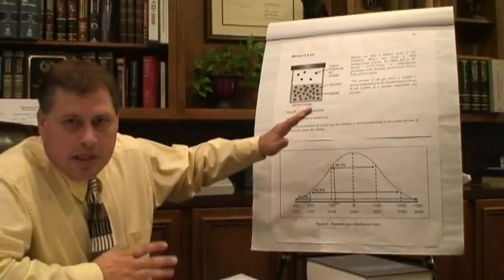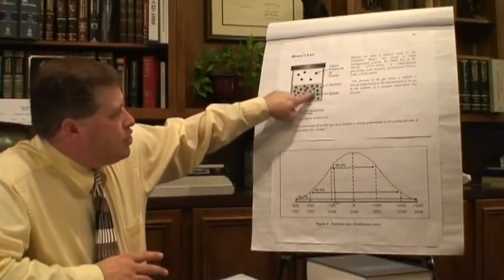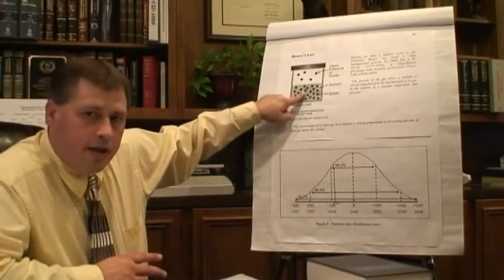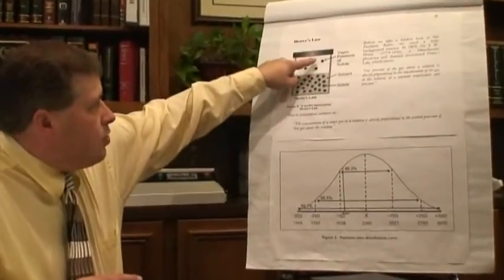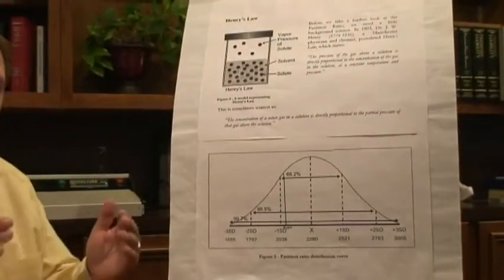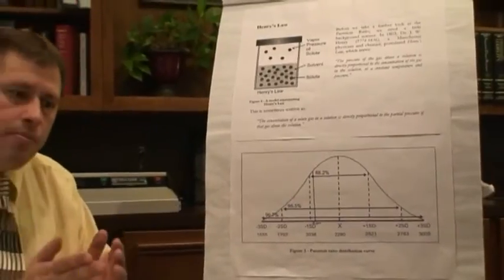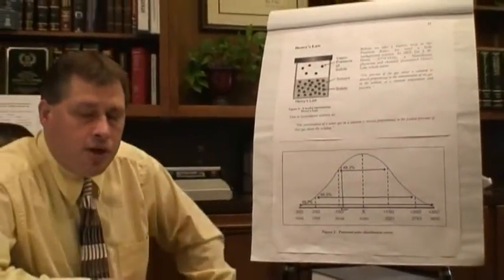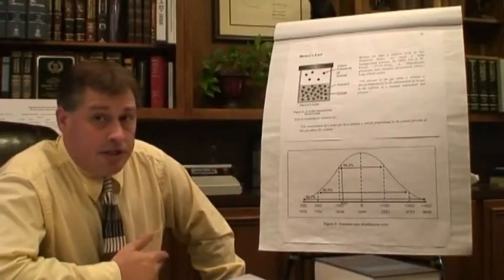And what he said was, it's a long formula, but part of the formula is he says that for every 2,100 ethanol molecules that you find in a person's blood, you will have one that ends up in the lung. It actually passes through the partition into the lung wall from the blood into the lung at a ratio of 1 to 2,100. And he calls that a partition ratio.